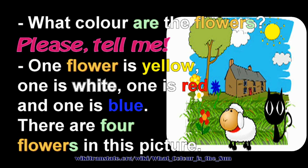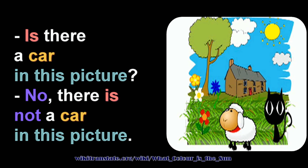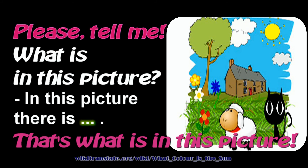There are four flowers in this picture. Is there a car in this picture? No, there is not a car in this picture. What is in this picture? In this picture there is a blue sky, a yellow sun, white clouds, green grass, a green tree, a black cat, and a white sheep. That's what is in this picture.